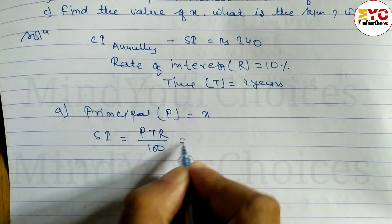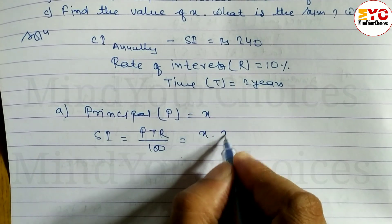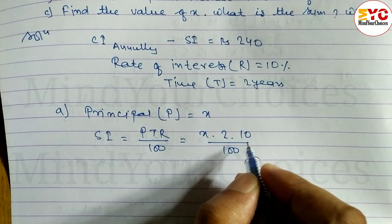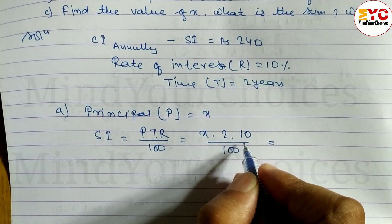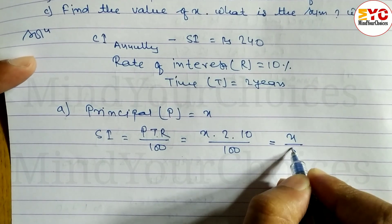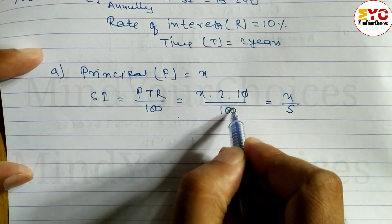Simple interest formula is PTR divided by 100. P is x, R is equal to 10, so x times 10 times 2 divided by 100. Calculate: 2 tens are 20, 20 divided by 100 is x by 5.